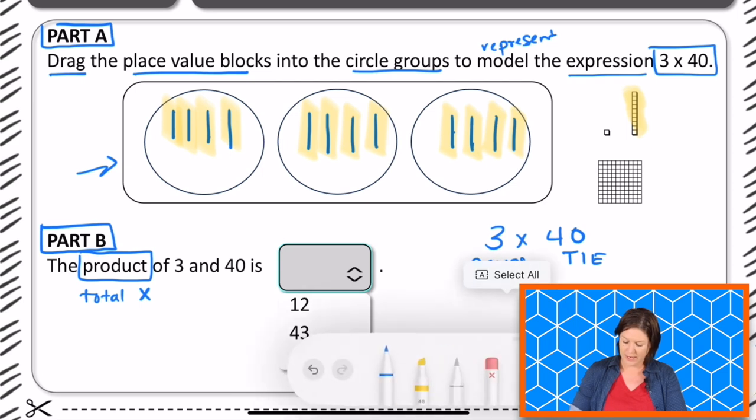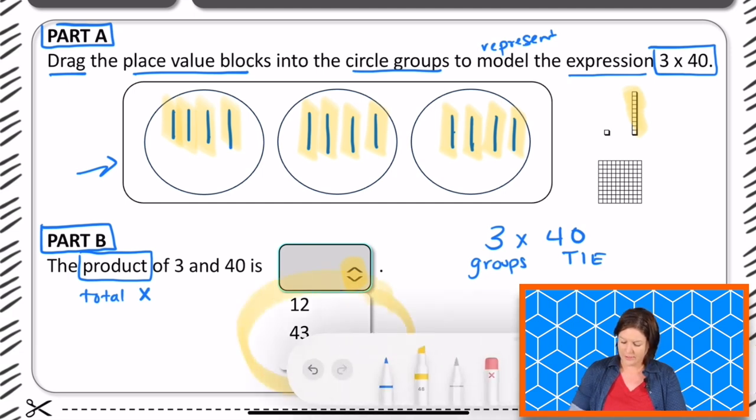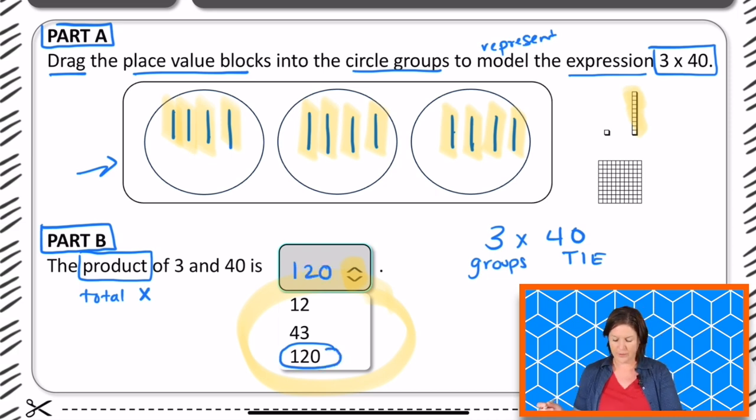So down here, this would be a drop-down menu. Right there, we click that and it would drop down this menu right there. And we would select 120, just like that. And then it would go up there, okay? So that is your problem this week, third grade.